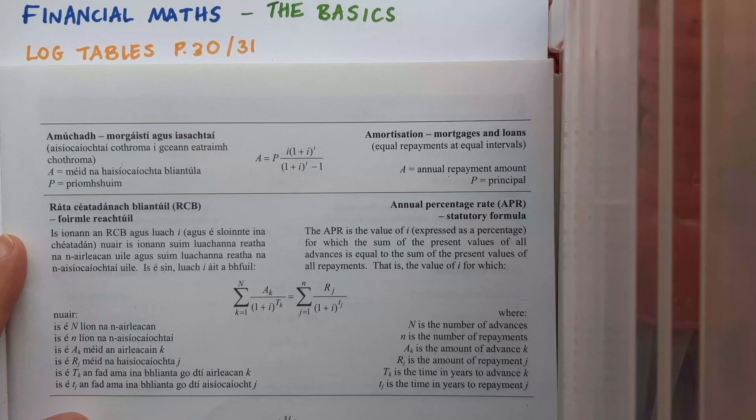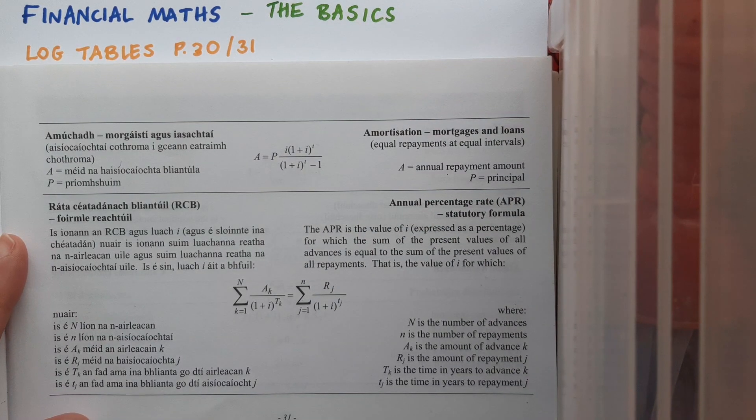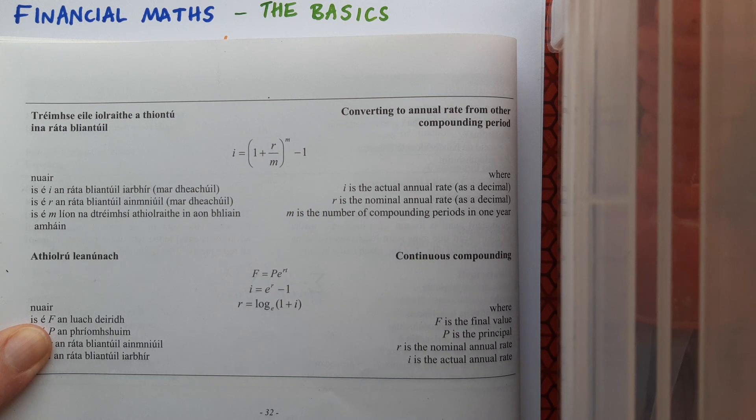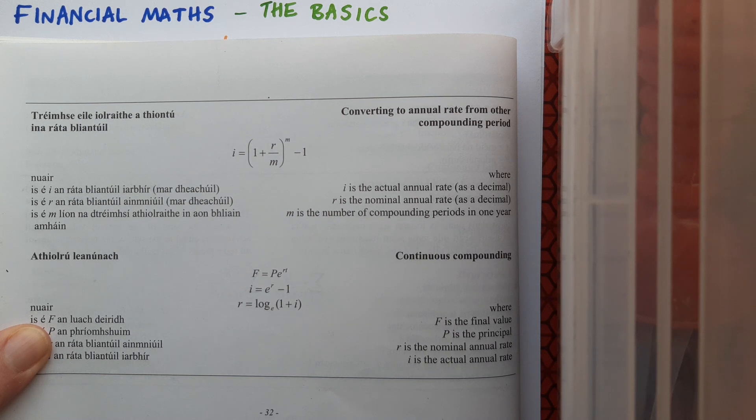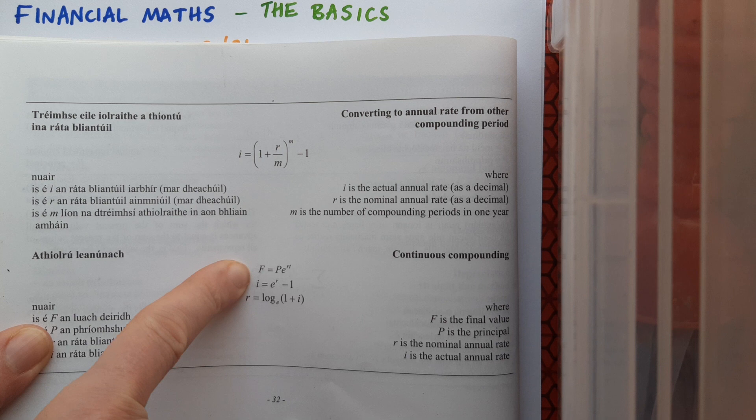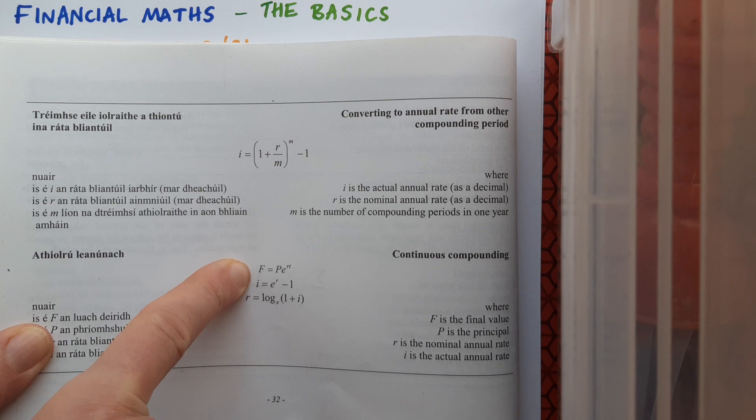If we turn over the page to page 31 at the top of the page here we have the amortization formula. We'll be seeing this a little bit later in the chapter. There are some more formulas on page 32 that we don't tend to encounter that much really. But it's interesting to note that in the continuous compounding section we see a formula that's very similar to one that we've seen previously in the algebra 3 chapter when we were dealing with logs and indices.